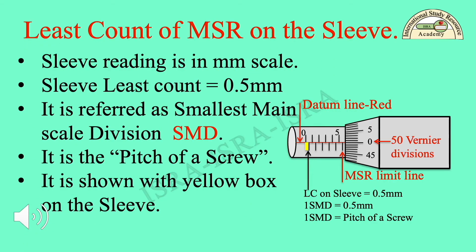Least count of MSR on the sleeve: the sleeve reading is in the millimeter scale. The sleeve least count is equal to 0.5 mm. It is referred to as the smallest main scale division, SMD. It is the pitch of the screw. It is shown with a yellow box on the sleeve.